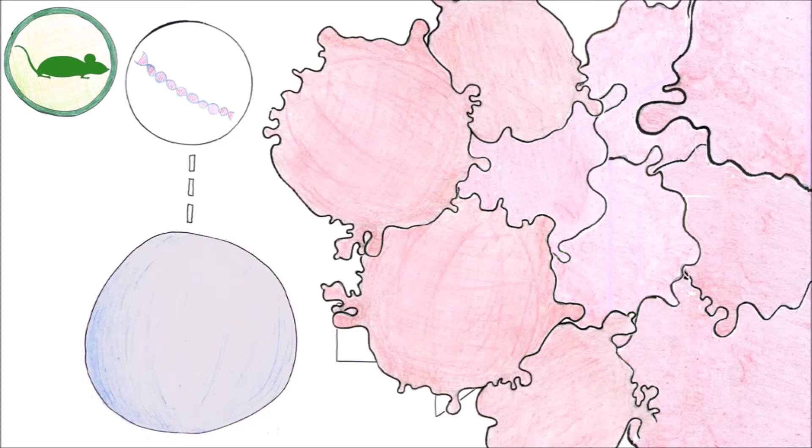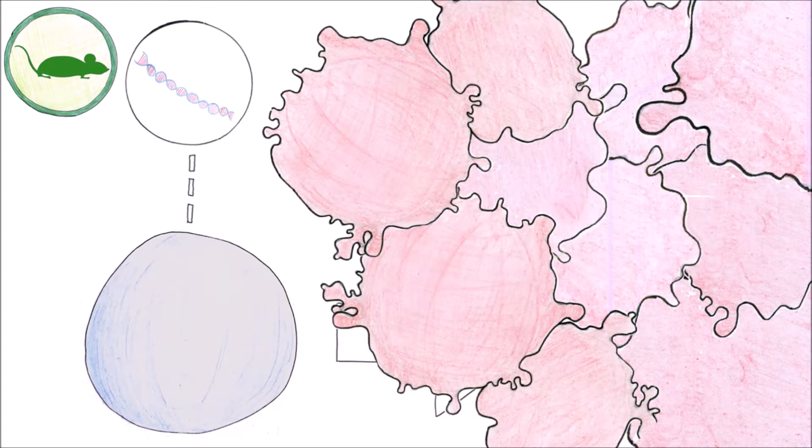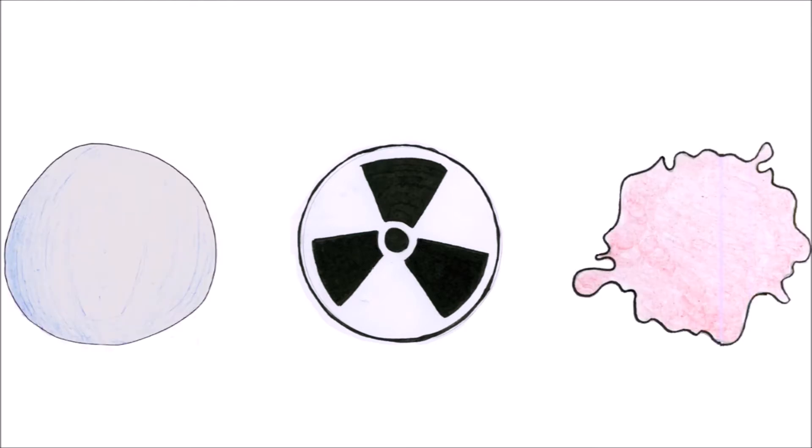Torpor can help cancer treatment in two ways. First, torpor slows down cell division. This can prevent the cancer cells from dividing, stopping the growth of the tumour. Secondly, torpor can help in radiotherapy. While radiation can cause cancer, it can also be used to kill cancer cells. Fast dividing cells, such as cancer cells, are extra vulnerable to the damage caused by radiation.